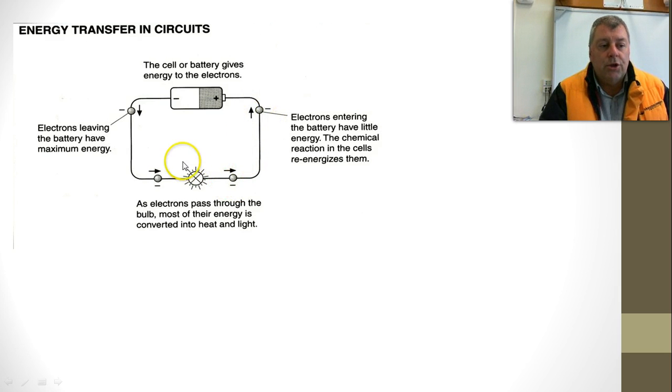They're still getting pushed along because it's like a very long queue and the queue just has to move forward. They're still getting pushed along by the electrons that have lots of energy. They enter the battery with very little energy and the chemical process works them through and pushes them out again the other side. And so the light globe glows.